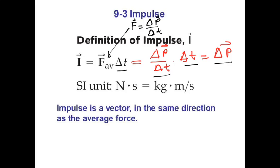Impulse is a vector, and this vector has the same direction as the change of momentum — not the momentum itself, but the change of momentum defines the direction of the impulse on the object.